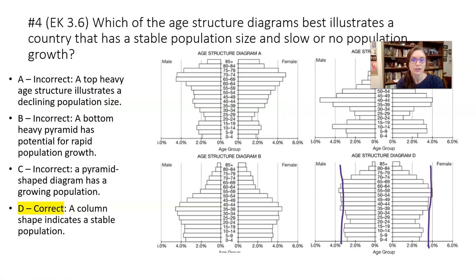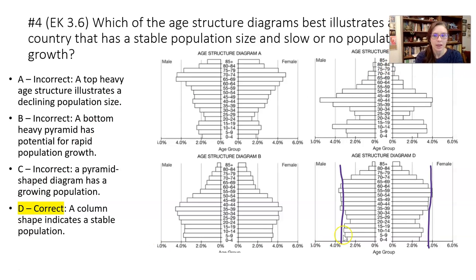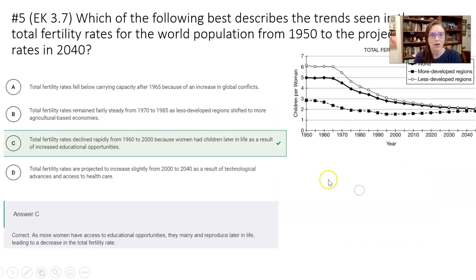On number four, we're looking at age structure diagrams again, looking for the stable population with slow or no population growth. That brings us to the columnar shape. One diagram shows declining, one has potential for growth, one will have a big bump coming up. The columnar one is the only one that's the most steady. Look for that column.